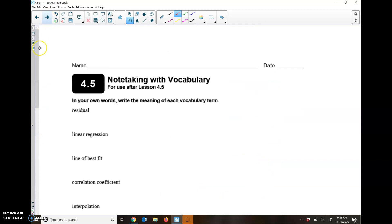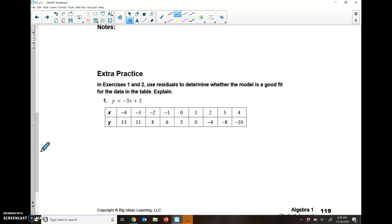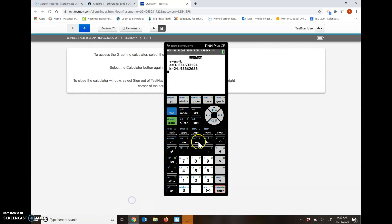Then we've got a couple of problems asking, is this a good line of fit? In exercise one and two, use the residual to determine whether the model is a good fit for the table. They say Y equals negative 3X plus 2. For this first one, I'm going to put it back in the calculator and kind of see what we get. If we get something close, then we'll say yes it's a good example, or no it's not.